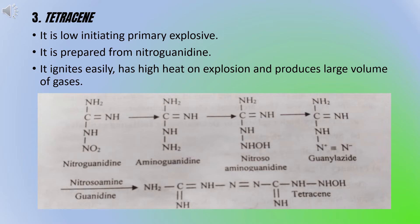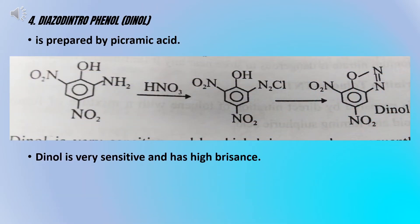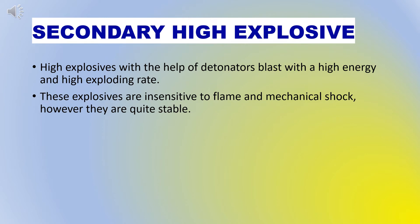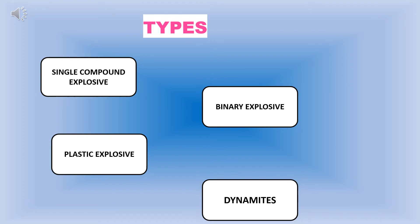Tetrazine ignites easily, has high heat on explosion and produces a large volume of gases. Dinol is prepared from pyramic acid. Dinol is very sensitive and has high brisance. Secondary high explosives, with the help of detonators, blast with high energy and high exploding rate. These explosives are insensitive to flame and mechanical shock but are quite stable. Types include single compound explosive, binary explosive, plastic explosive and dynamite.